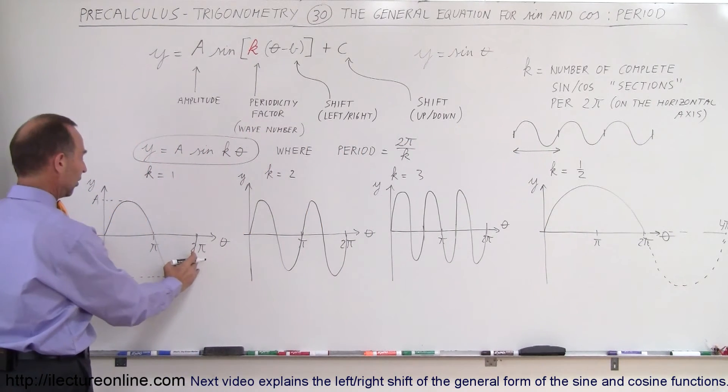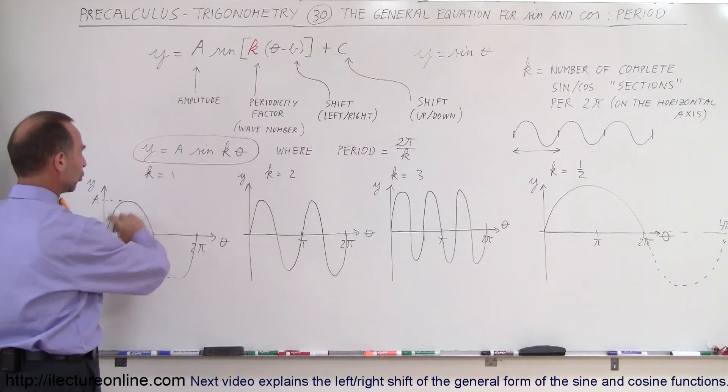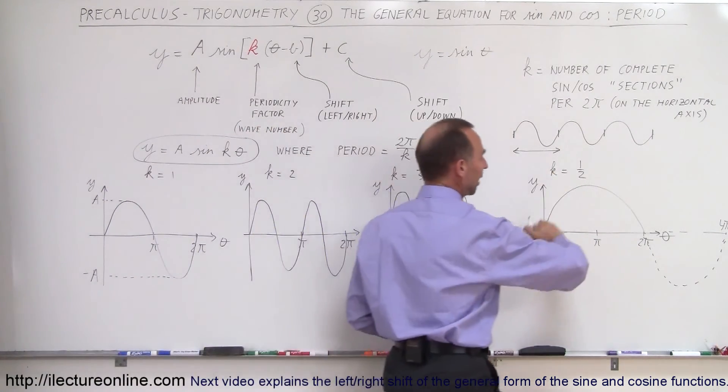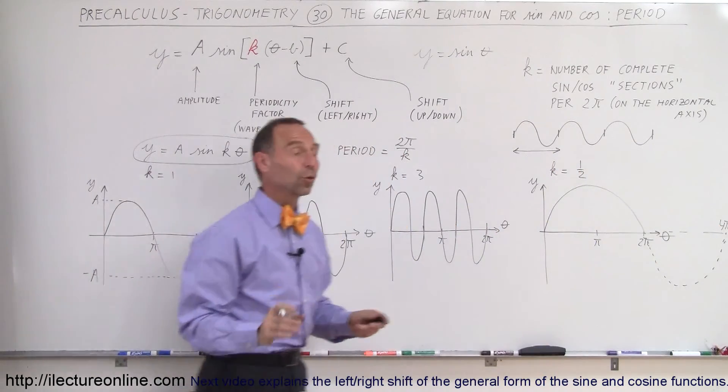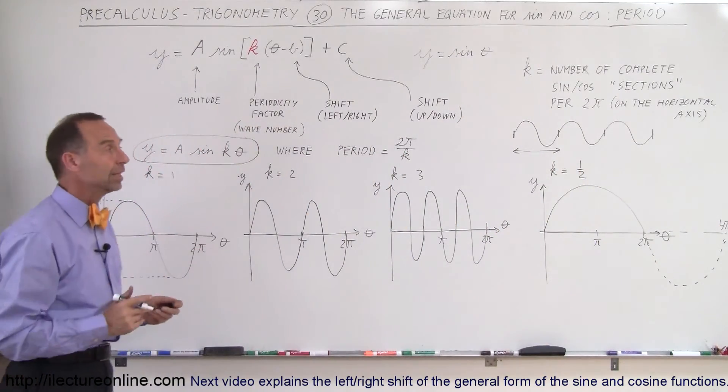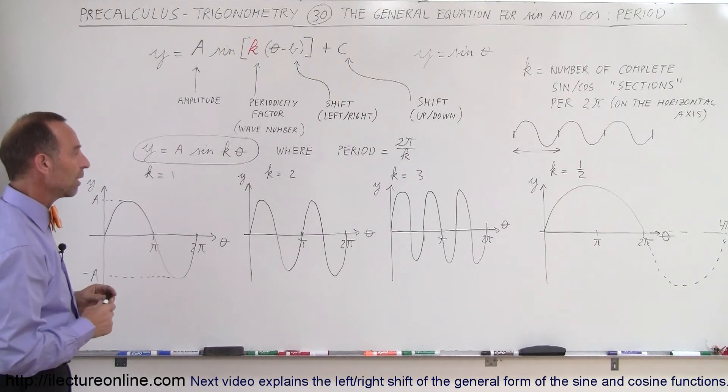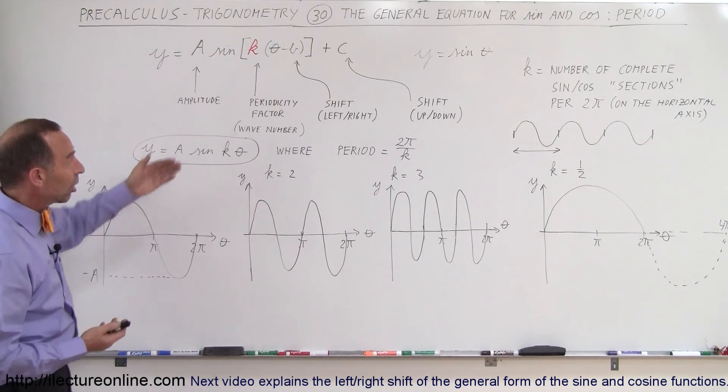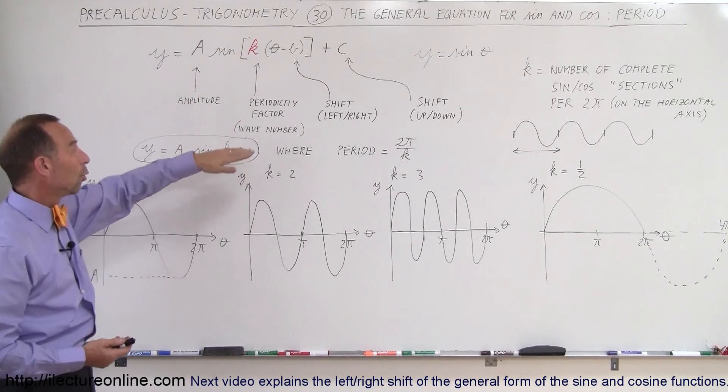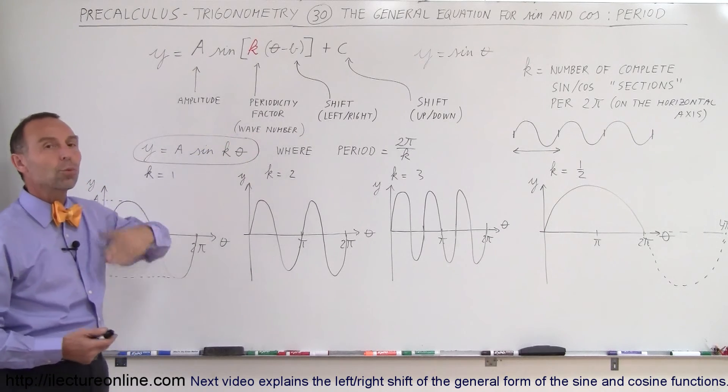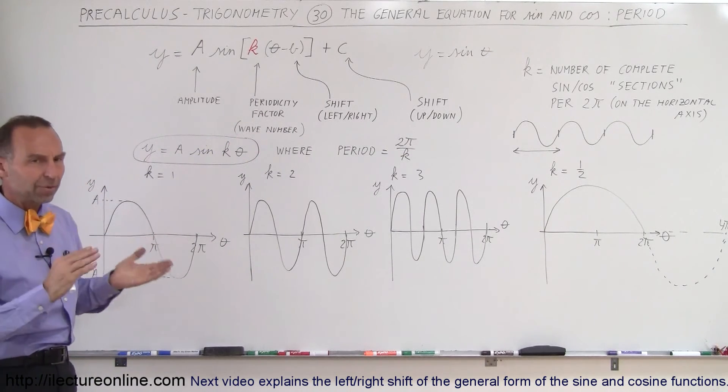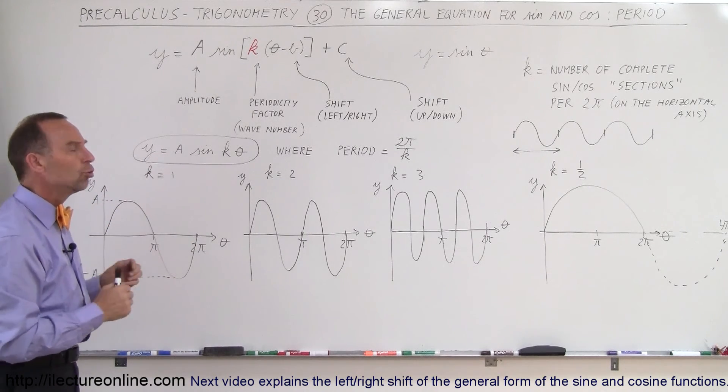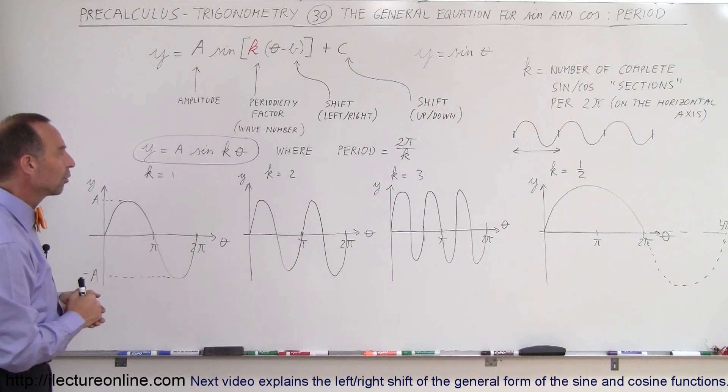So you can compare this as a normal wave or normal sine or cosine function when k is equal to 1. Here when k is equal to 1/2, it requires twice the distance on the horizontal axis to have one complete section of the sine wave or the cosine wave. So hopefully this helps you understand what k represents. I like to call it the periodicity factor, or in physics we call it the wave number, where the sine or cosine function actually represents a wave and k represents the number of oscillations you have per 2π distance on the horizontal axis.